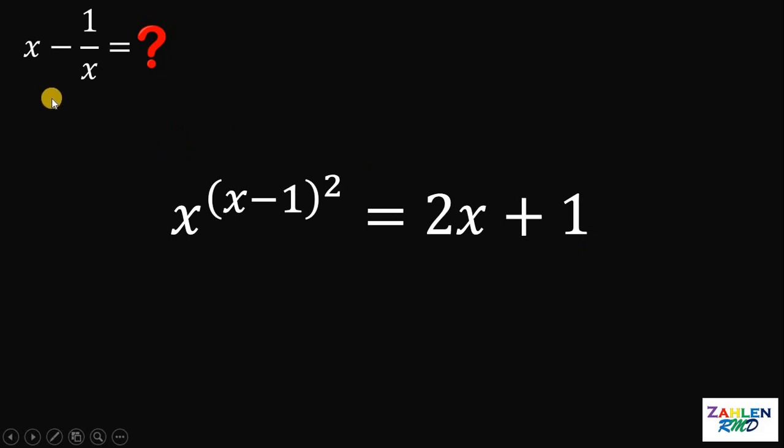Our goal is to find the value of x minus 1 over x and the given equation to us is x raised to x minus 1 raised to 2 equals 2x plus 1. Now, how are we going to start our solution?